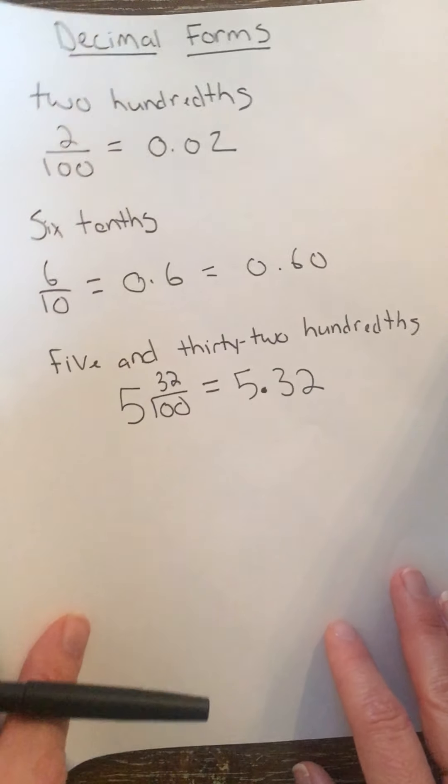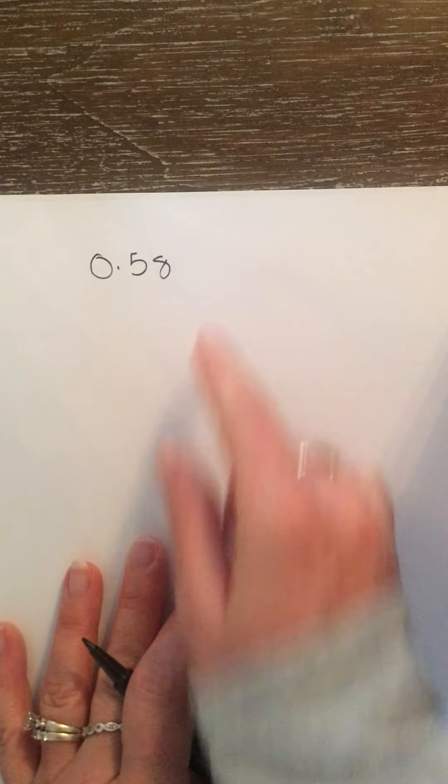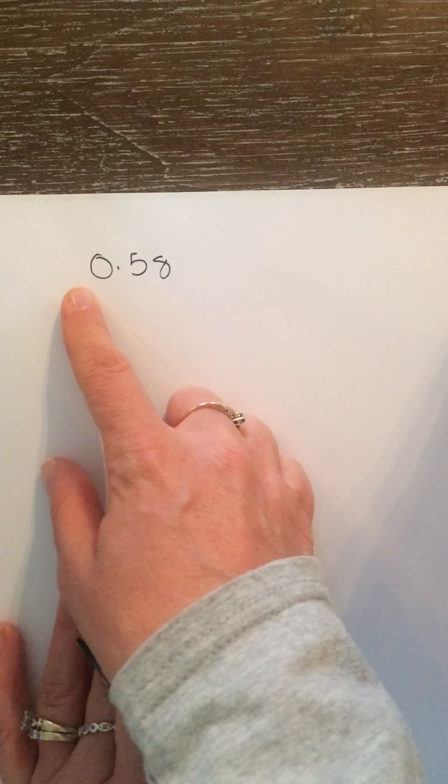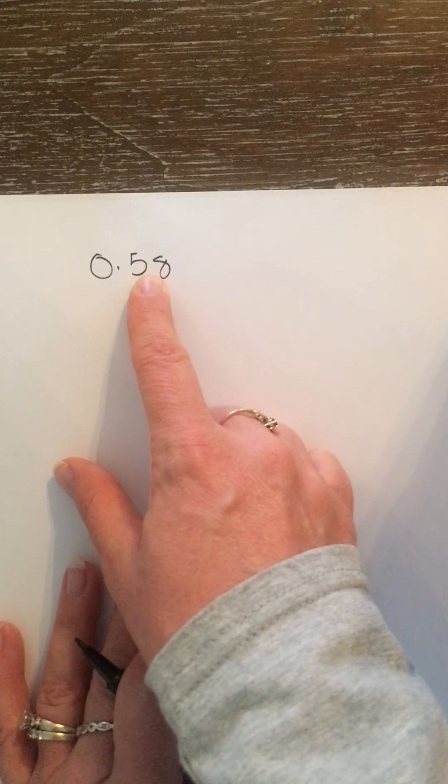Now I'm going to give you a decimal form and show you how you would convert that to expanded form. So if I give you a decimal — I know if I read it, it says 'fifty-eight hundredths' — but I'm going to write it in expanded form. We have to remember the place value of each digit. I don't have anything in the ones place, so I go to my next place value, which is the tenths. There are five tenths.